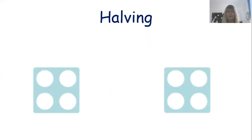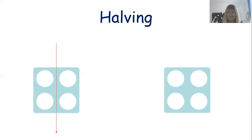We're going to look at halving. I have put up two numicon tiles — they're both fours — and we're going to start by looking at what happens if we just draw a line down the middle. Have we got the same number on both sides? One, two on the left; one, two on the right. We have halved four and it is two. Half of four is two.